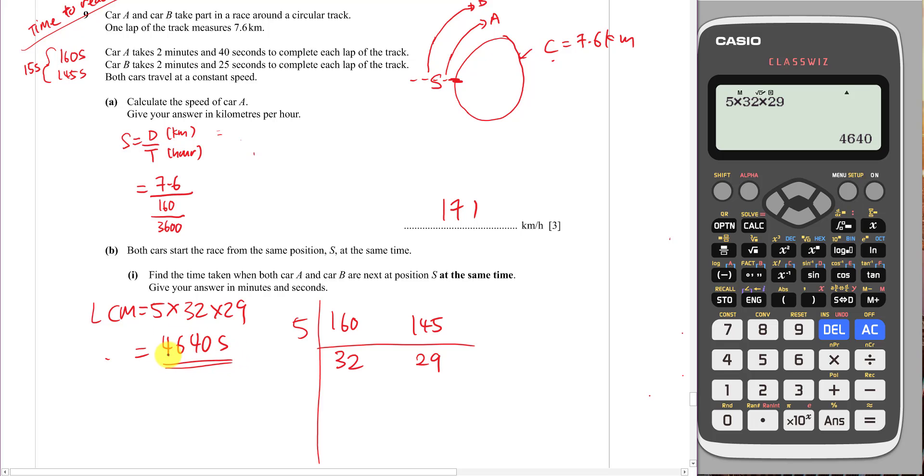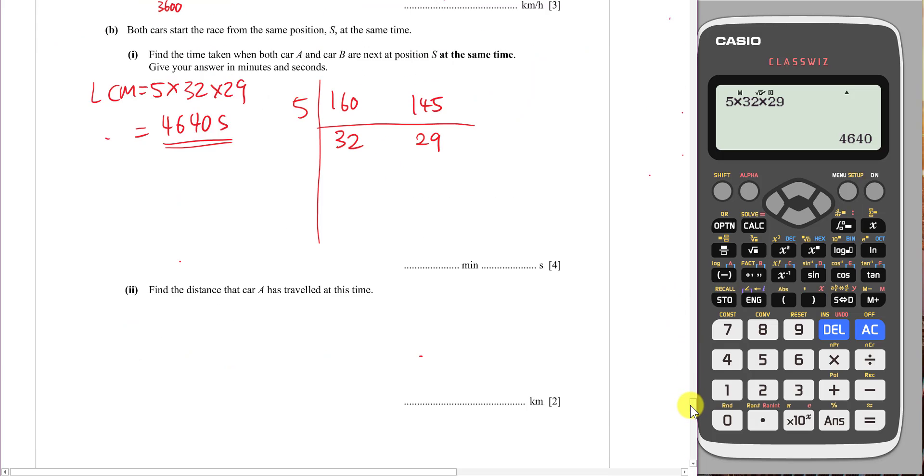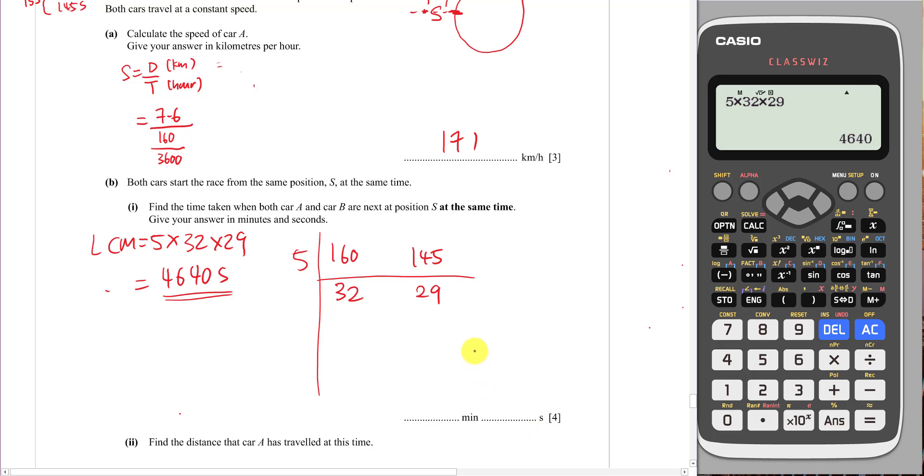I know after 4640 seconds, both of them are going to meet at S. The answer here wants me to convert into minutes and seconds, which is quite easy. I'll just use this number divided by 60. Then I convert into minutes: 77 minutes. If I change to the mixed number, this is 77 minutes and 1/3 minutes. If I know 1/3 minutes means how many seconds, I can take the fraction, multiply by 60. So it equals 20 seconds.